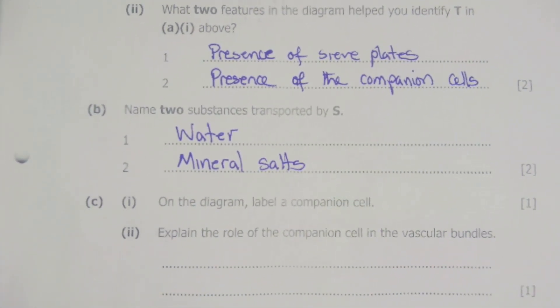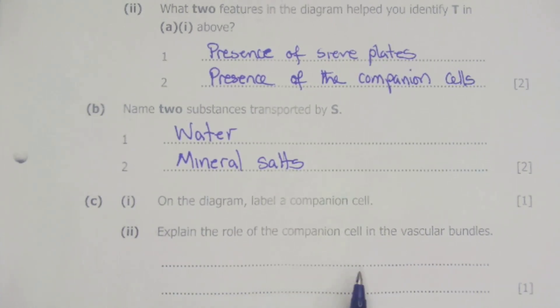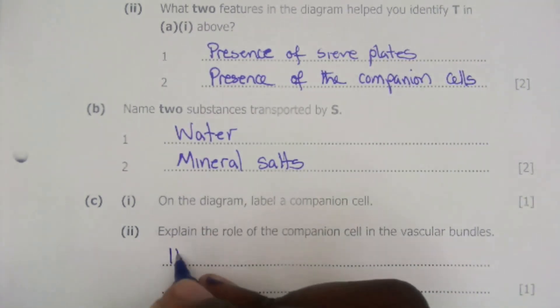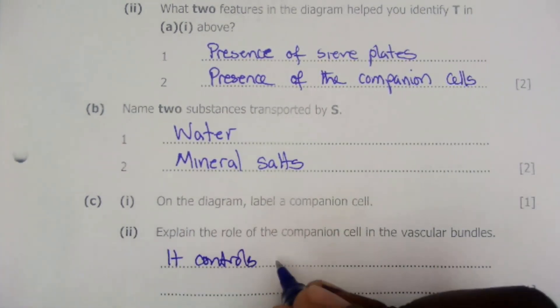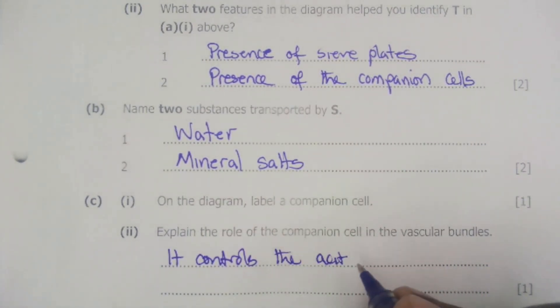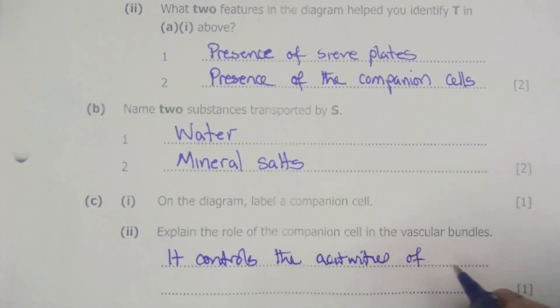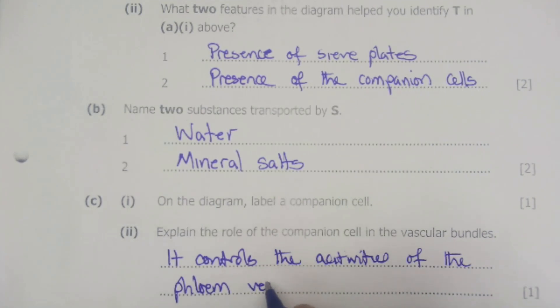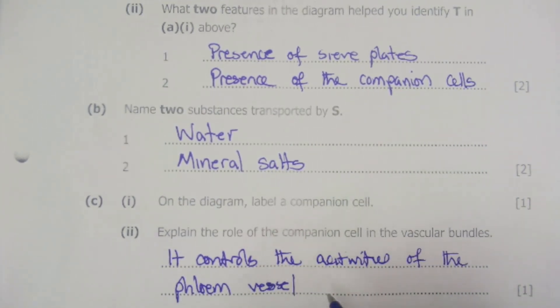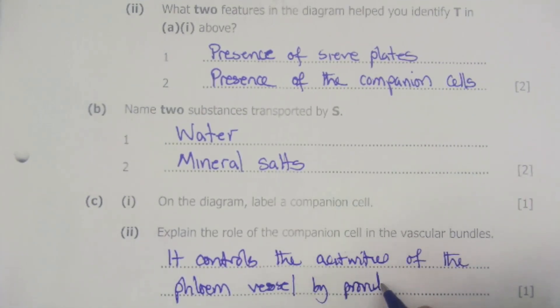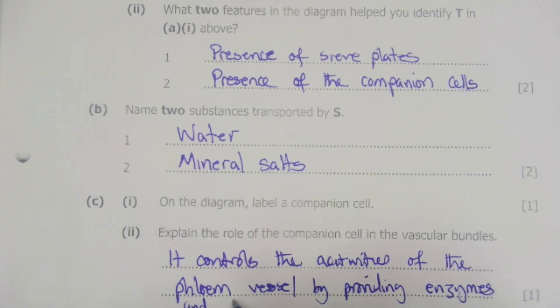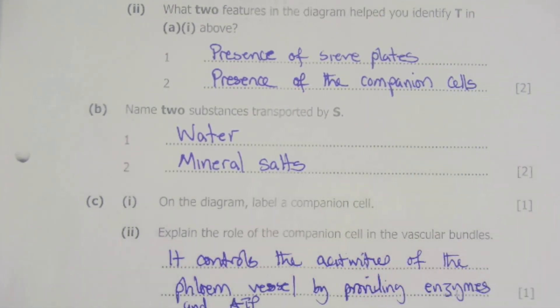For C2, it's asking us to explain the role of the companion cell in the vascular bundle. So the companion cell will simply control, it controls the activities of the phloem vessels by providing enzymes and the energy, which is just simply ATP. So that will be the function.